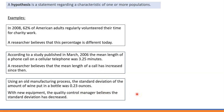researchers — or in the last example the quality control manager — all believe that the original description of the population has changed in a certain way. How do we know if their claims are true? It's very hard or often impossible to collect data from the entire population, so we usually work with samples.